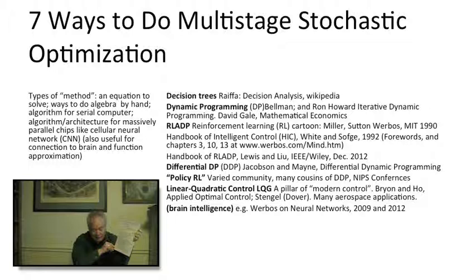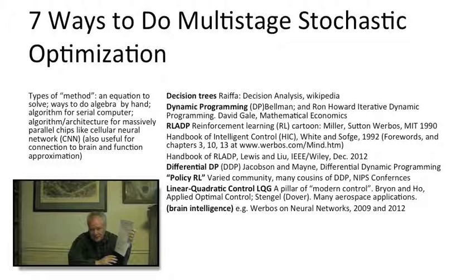Optimization when you are facing a stochastic world, when there is uncertainty. These seven methods are all very important and they are not really just specific methods — they are really families of methods. And it's important to know their relations with each other. I'm going to review a little bit of what I discussed before, again to try to bring the picture together.